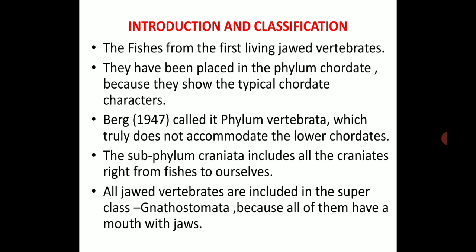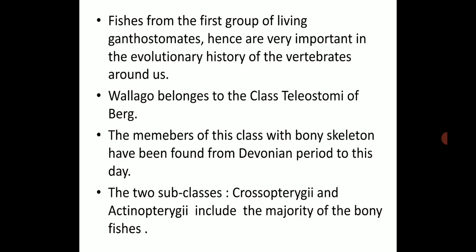The subphylum Craniata includes all craniates, right from the fishes to ourselves — meaning these animals have a cranium present. All jaw vertebrates are included in the superclass Gnathostomata because all of them have a mouth with jaws. Fishes form the first group of living Gnathostomata, hence they are very important in the evolutionary history of the vertebrates around us.